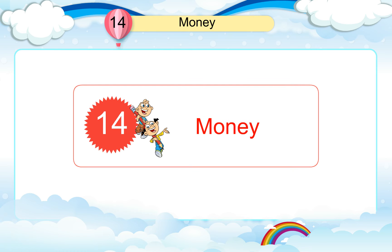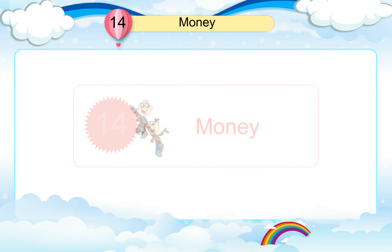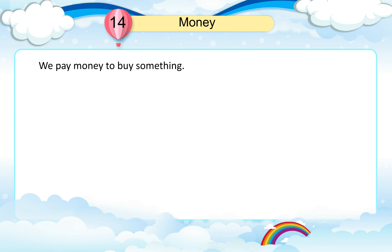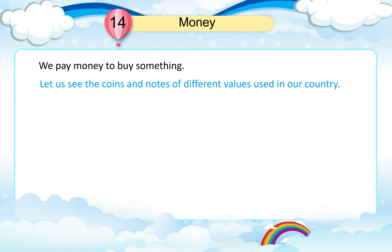Chapter 14: Money. We pay money to buy something. Let us see the coins and notes of different values used in our country. Coins.